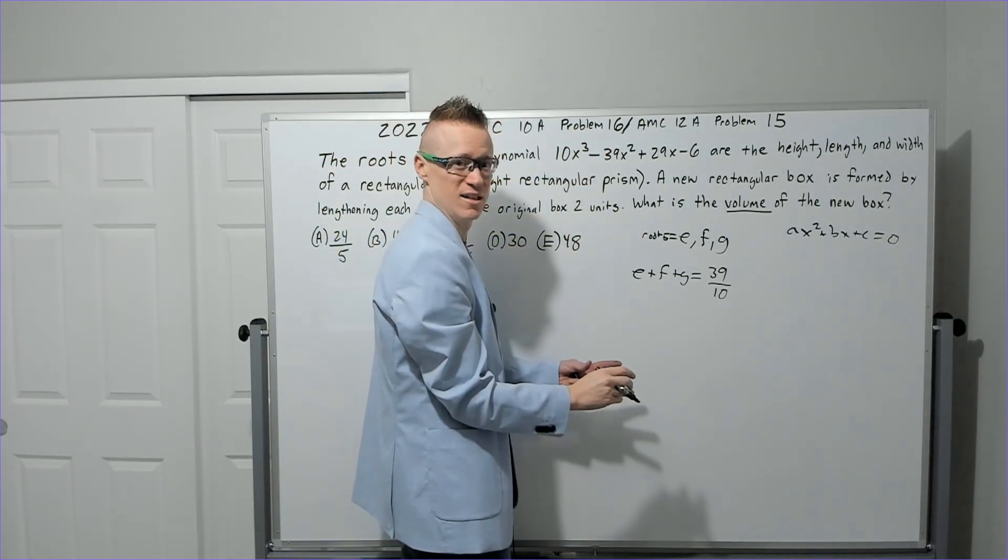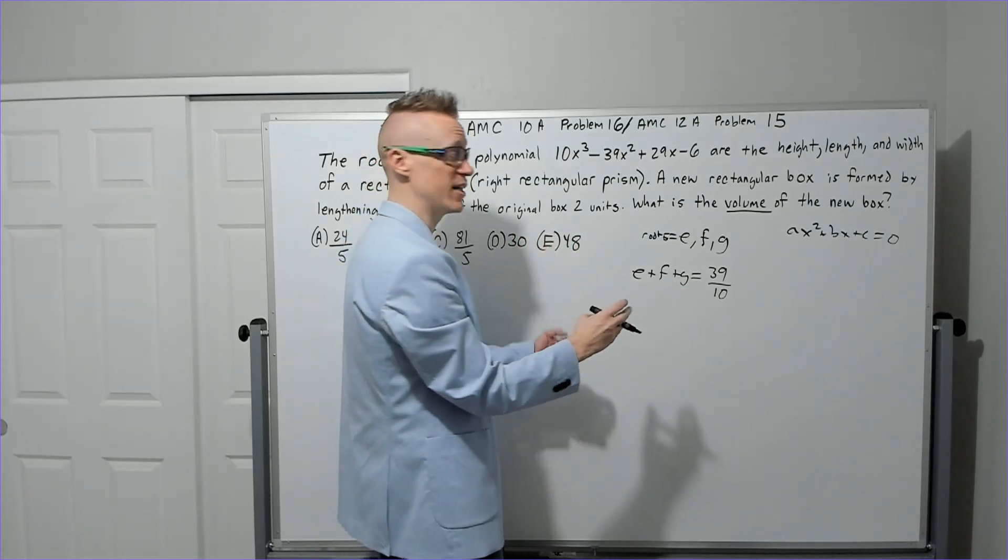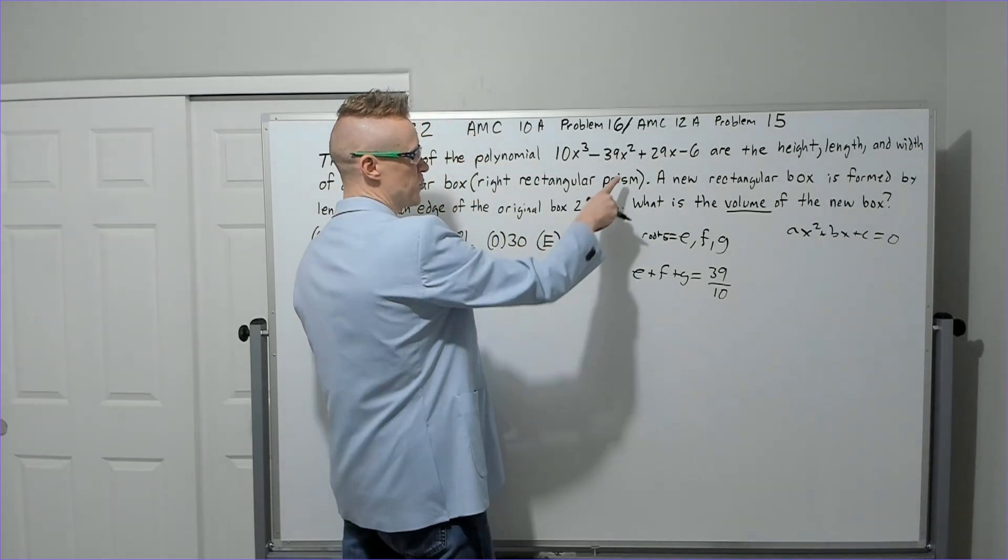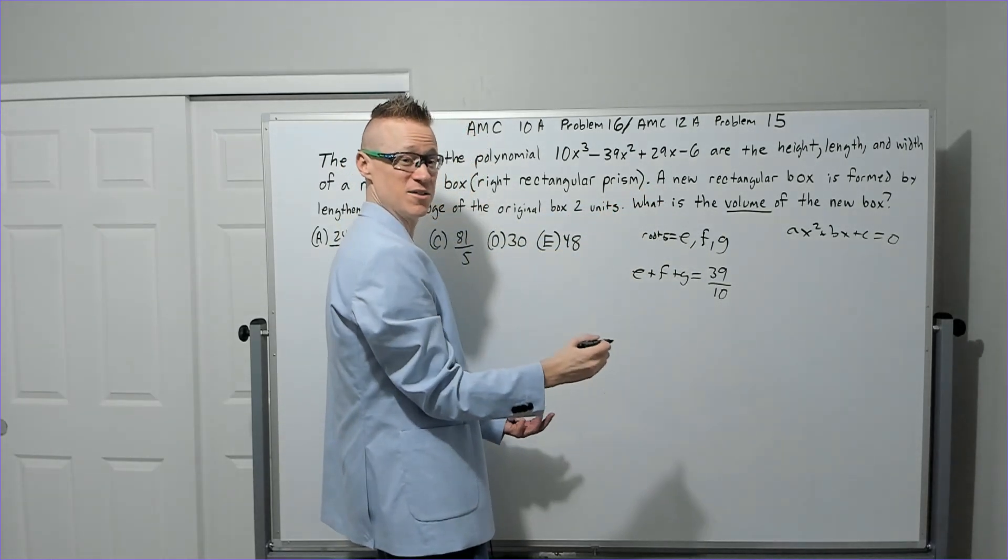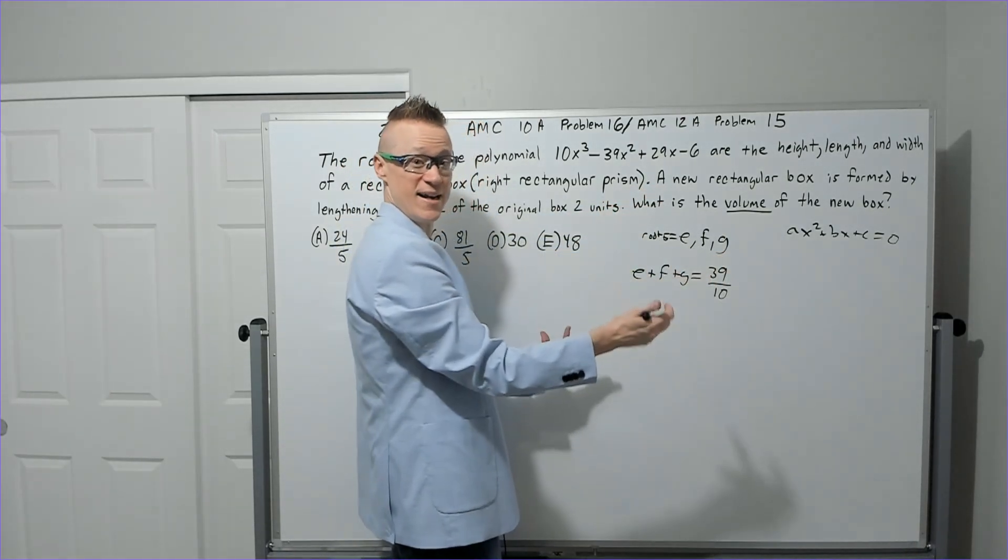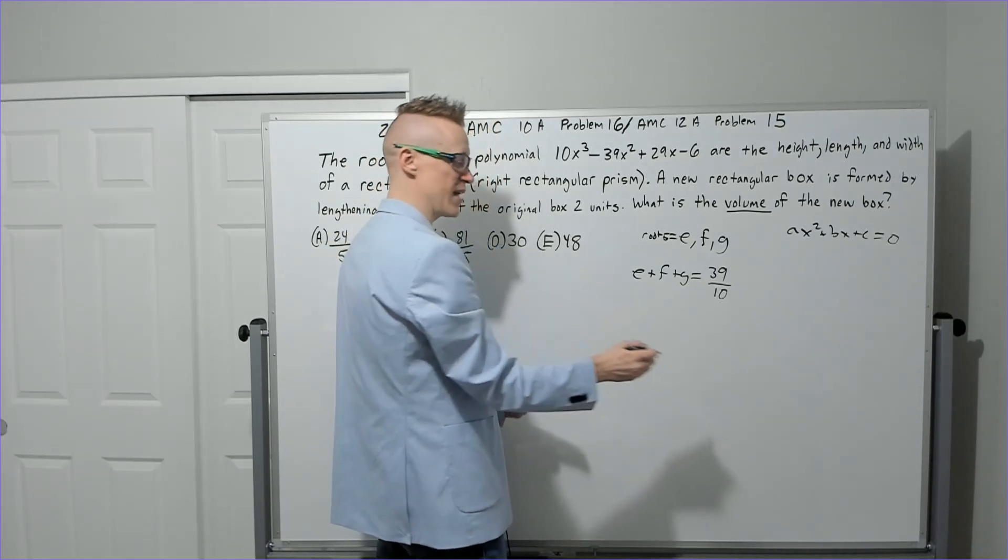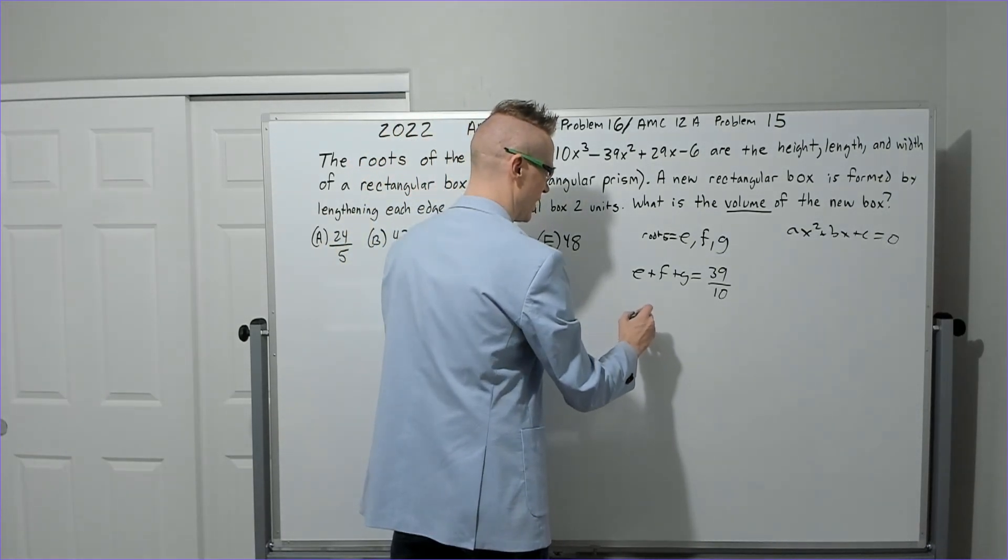Because that's the negative second over first, which is how you want to memorize it. Don't memorize the letters because if they switch the letters on you, you're going to get confused. All right, the next one is the pairwise products. Pairwise products is what it sounds like—we're taking these and we're making them into pairs.